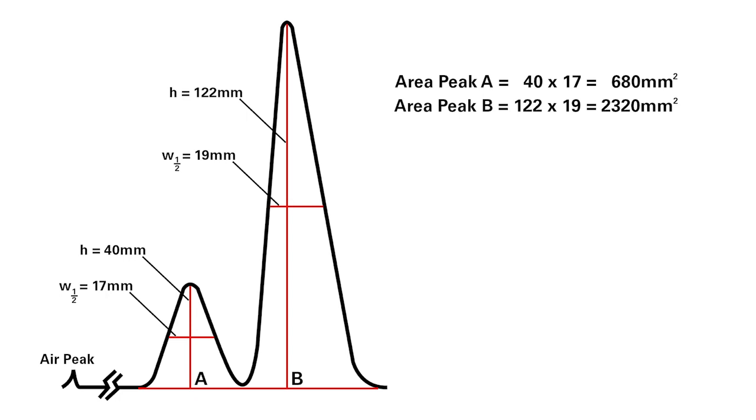The total area is the sum of the area of peak A plus the area of peak B. 680 plus 2,320 equals 3,000 millimeters squared.